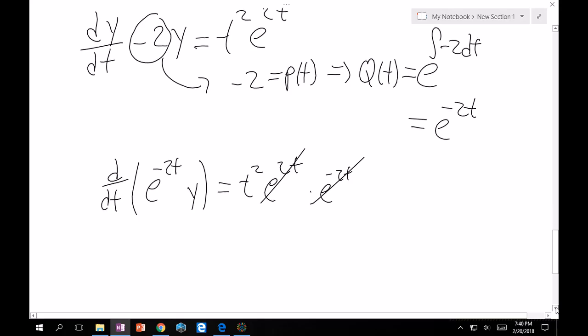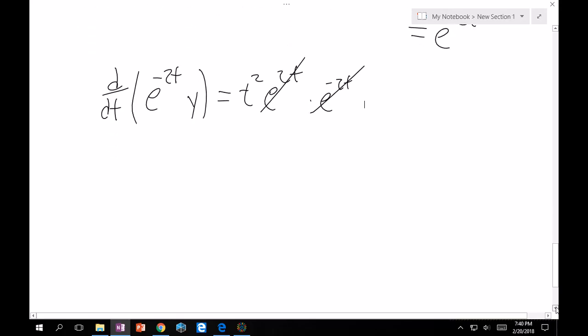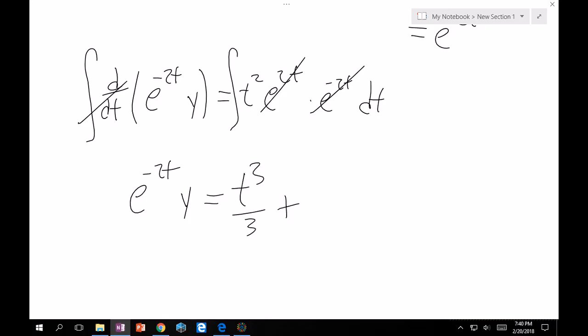So, now the equation at hand to solve is just this. So, I want to integrate both sides with respect to t and so these will go away. e to the minus 2t times y will equal t cubed over 3 and then immediately put plus C. I'm going to put a star just because it's so important. Immediately add plus C.